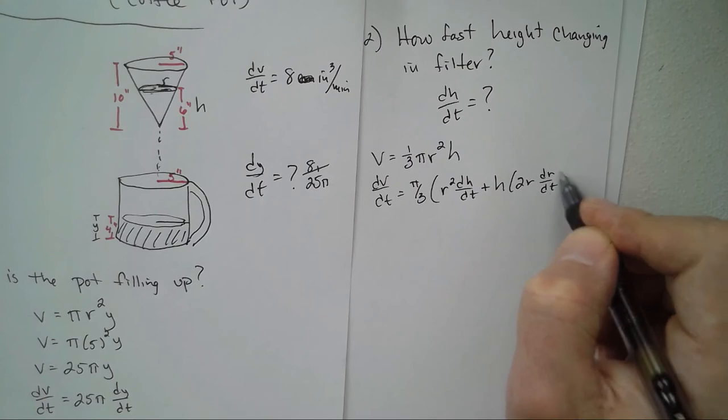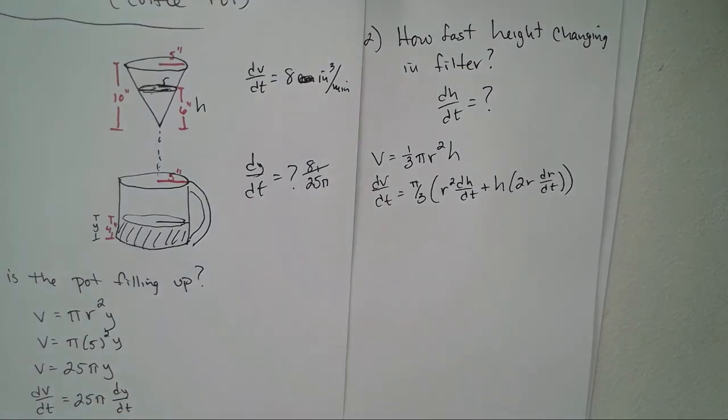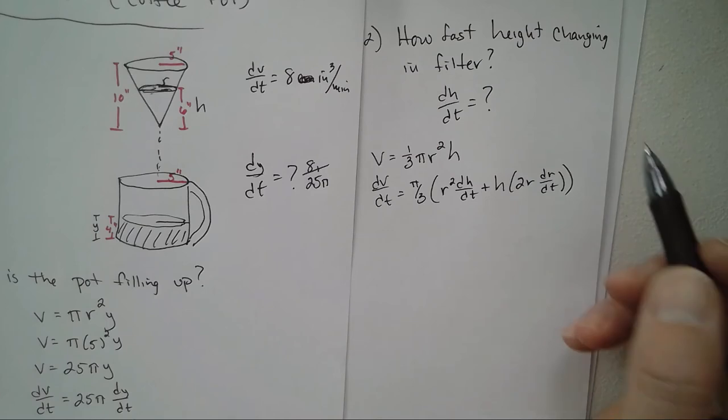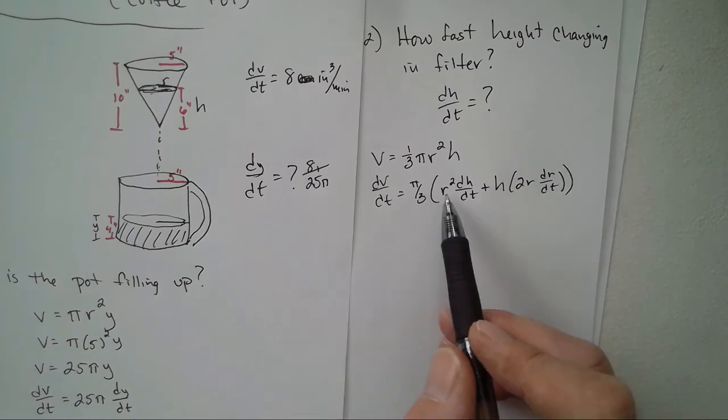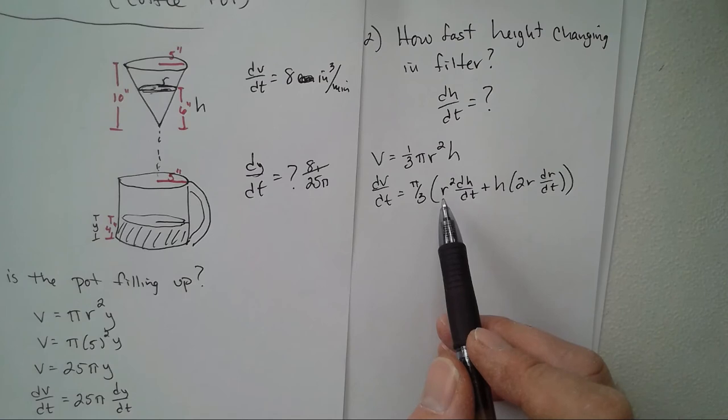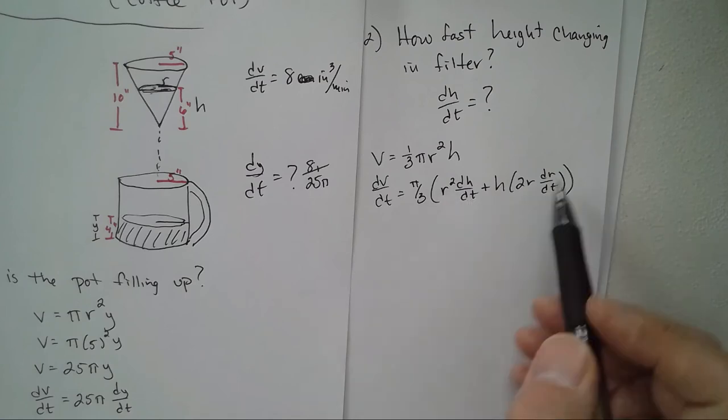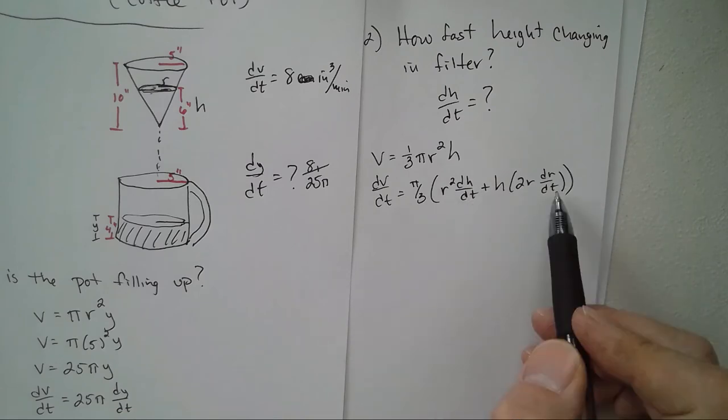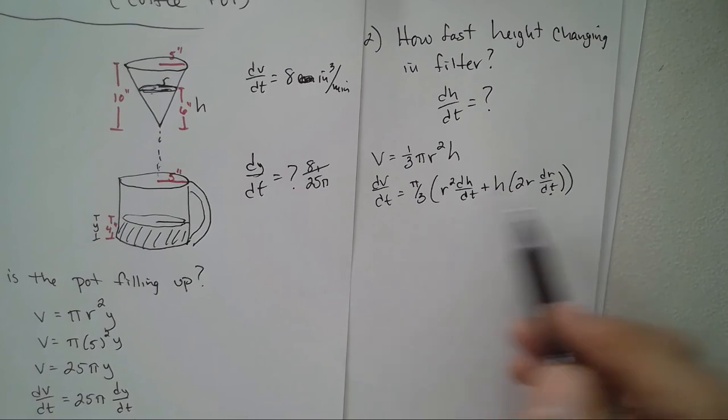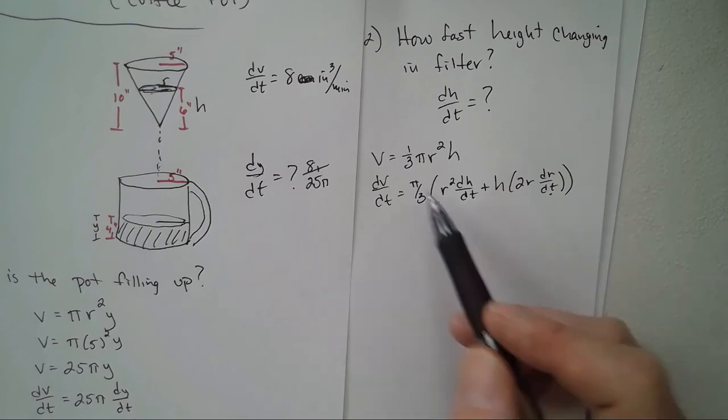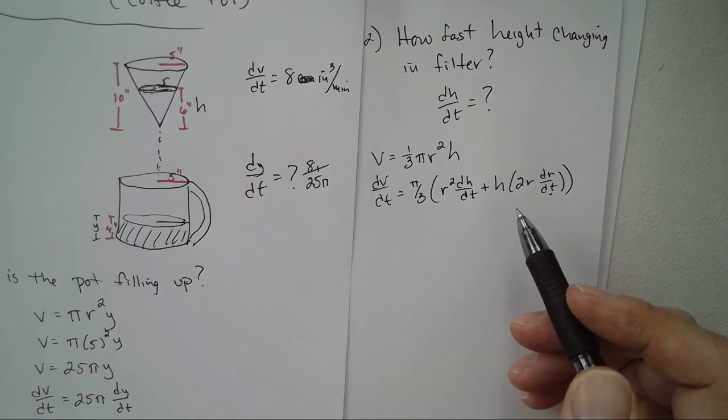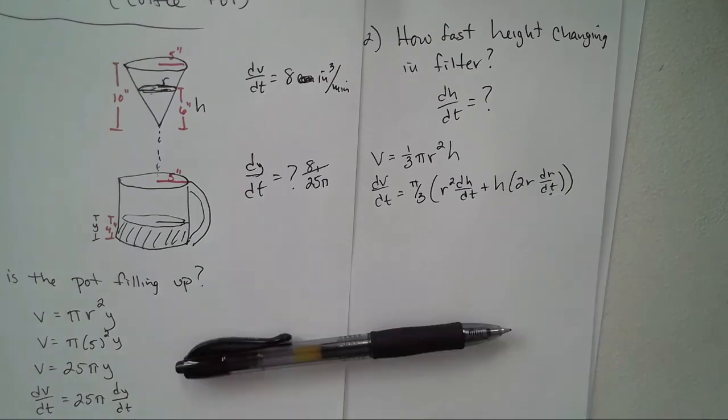We could find r maybe, dV/dt is what we're looking for, dV/dt we don't know. So we don't know dV/dt, we don't know dr/dt. We have too many variables here, so we can't solve it as is. So we're going to have to...